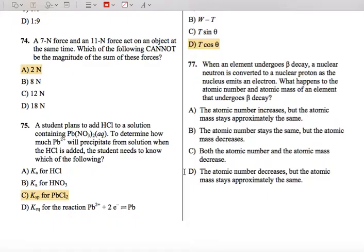What happens to the atomic number and atomic mass of an element that undergoes beta decay? So this one's pretty easy. We know that protons and neutrons have approximately the same mass, and electrons, obviously they have a mass, but with respect to atoms, adding or removing an electron isn't going to really change anything.